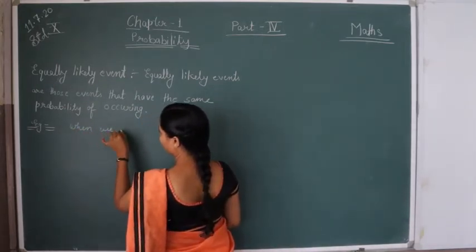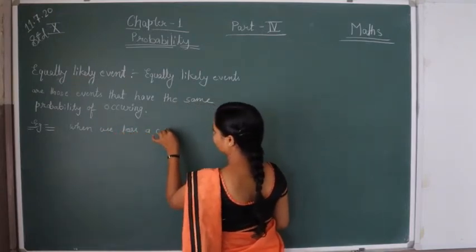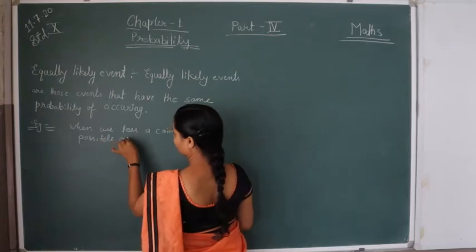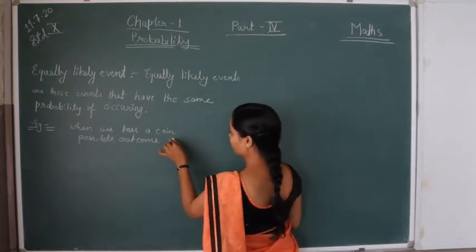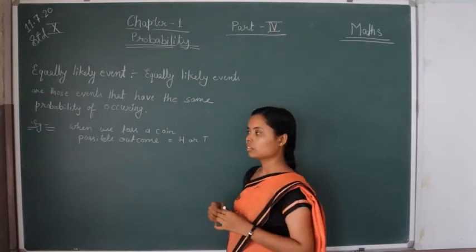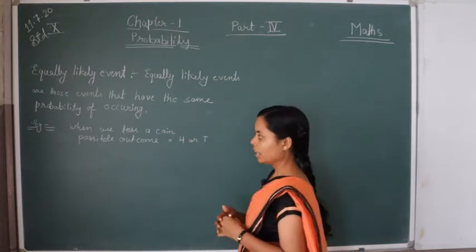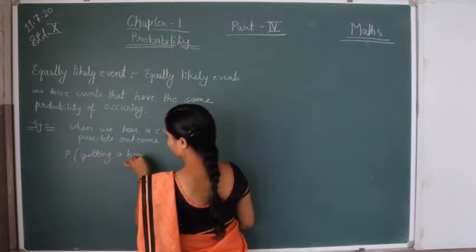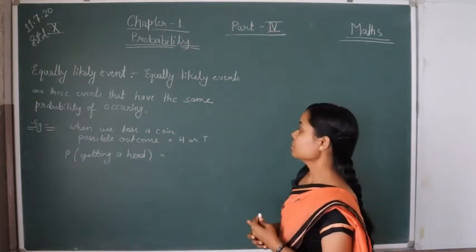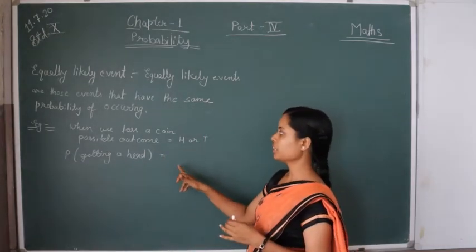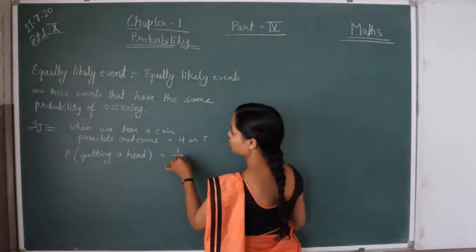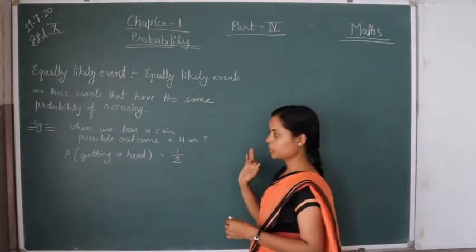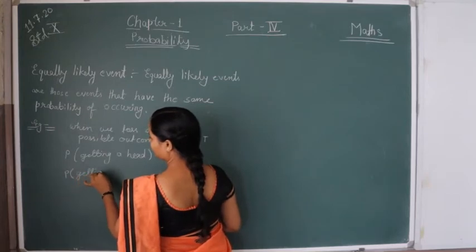When we toss a coin, the possible outcomes are head or tail — there are only two possible outcomes. If we find the probability of getting a head, as we have learned in the previous session, the probability of getting a head is: favorable outcomes over possible outcomes = 1/2. Probability of getting a head is 1/2. And when we find the probability of getting a tail,